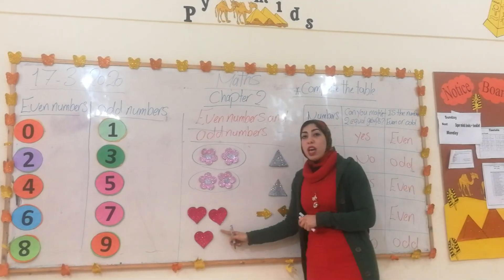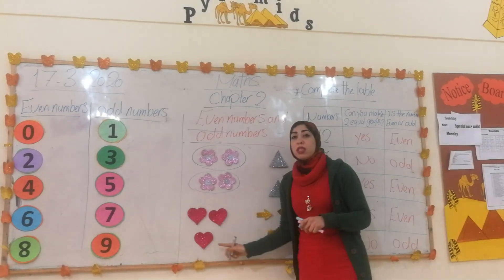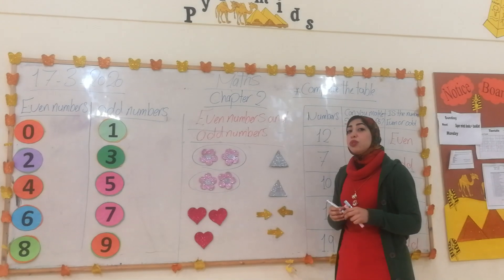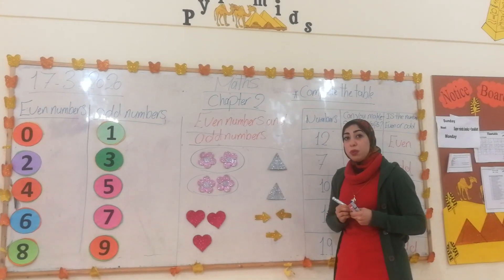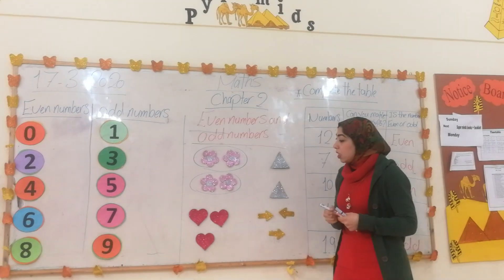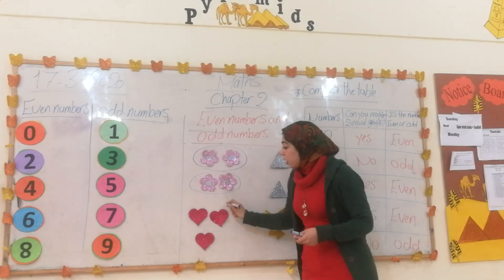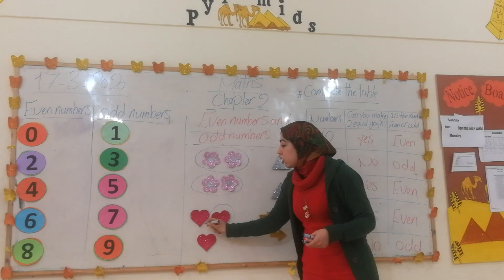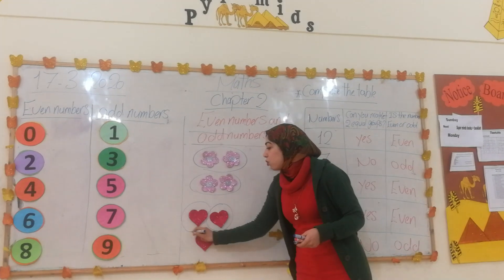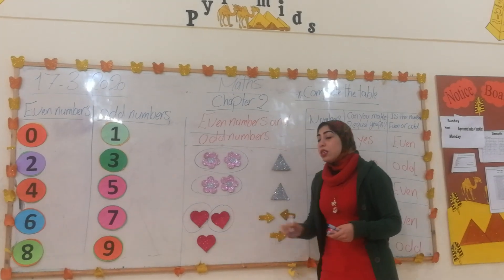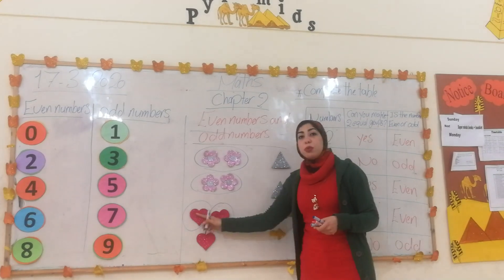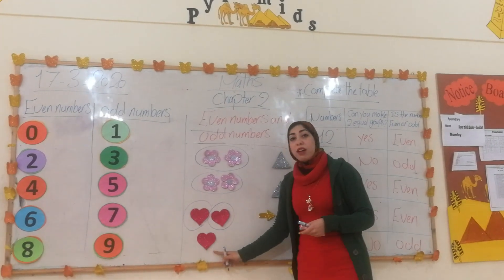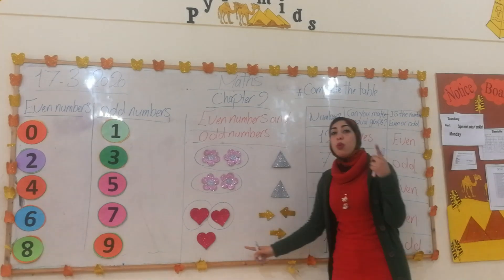Let's see here. We have three hearts. Can we divide three hearts into two equal groups? If I make here a group of one heart and another group of one heart, those groups are equal — but we still have a remainder of 1.